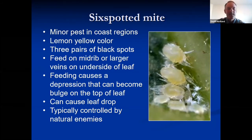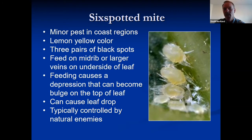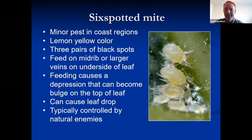Six-spotted mite — sometimes seen in coast regions on lemons. Uniform lemon-yellow color with spots on the back. They tend to feed right on the midrib on the underside of the leaf, causing an actual depression in the leaf and a little bubble that sticks up on the top surface. If you see a little bulge on top and yellow mites underneath, that's what it is. Treatments are extremely rare — natural enemies typically do a good job, pending natural enemy disruption.